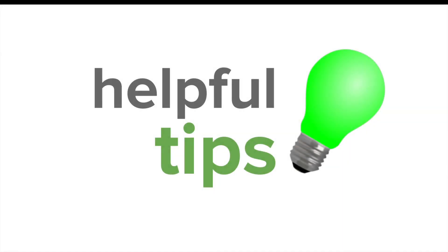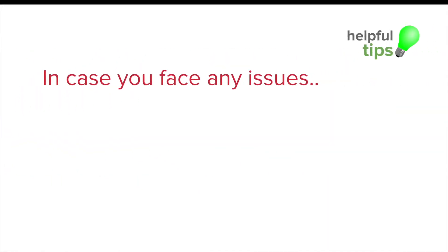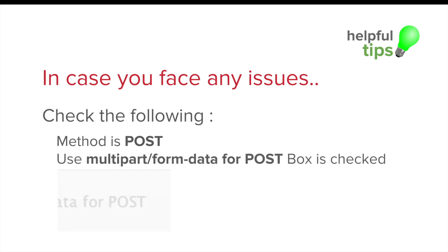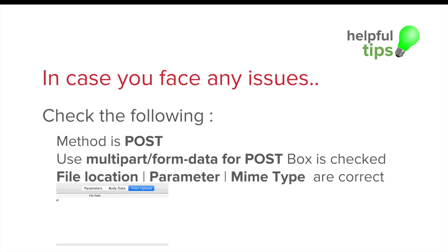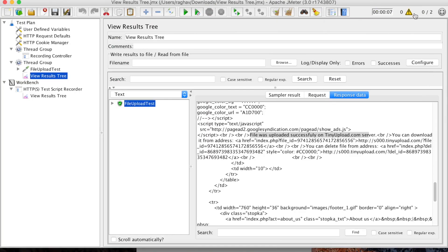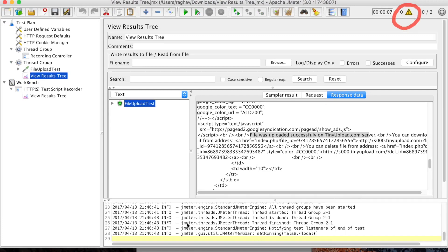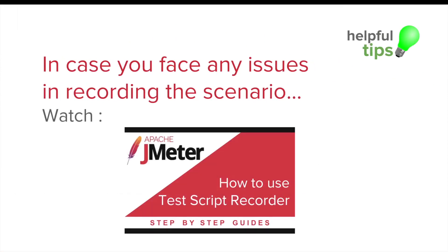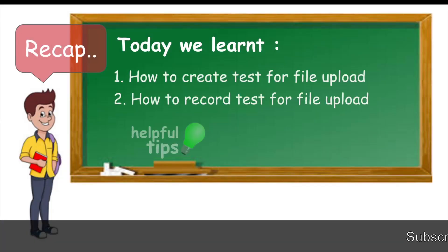Let us look at some useful tips. In case you face any issues while doing a file upload, check the following: the method in the HTTP Request should be POST; check the box for multipart form data for POST; make sure the parameters, file location, and MIME type are all correct. Check the logs in JMeter — there is an icon at the top; click it and logs will show at the bottom. Also, if you face issues while recording, watch the earlier session on how to use the Test Script Recorder.